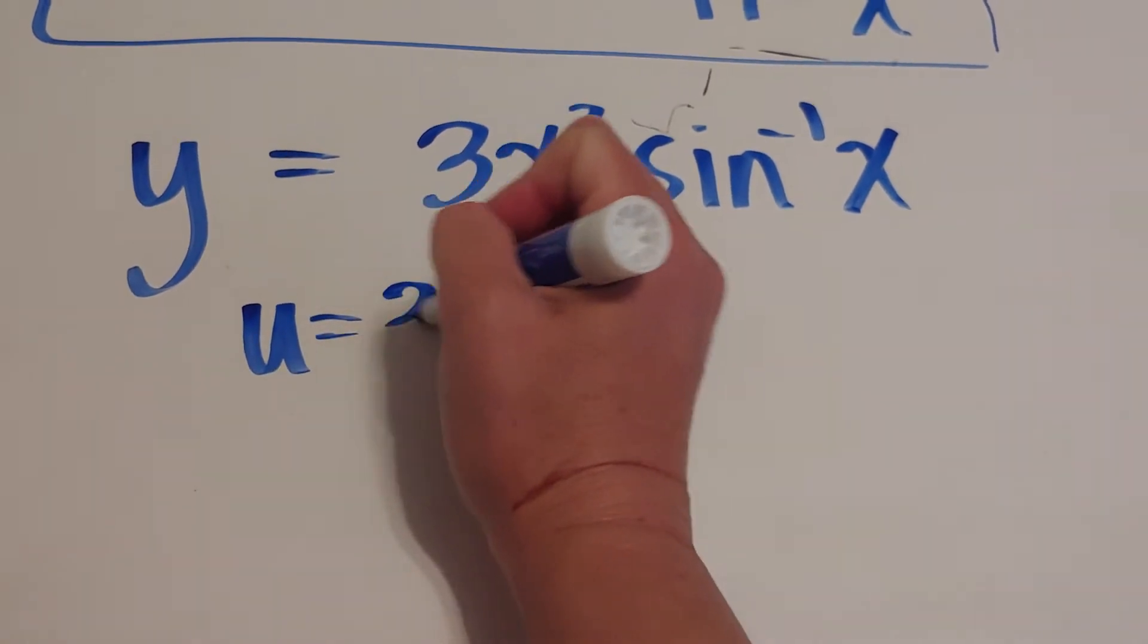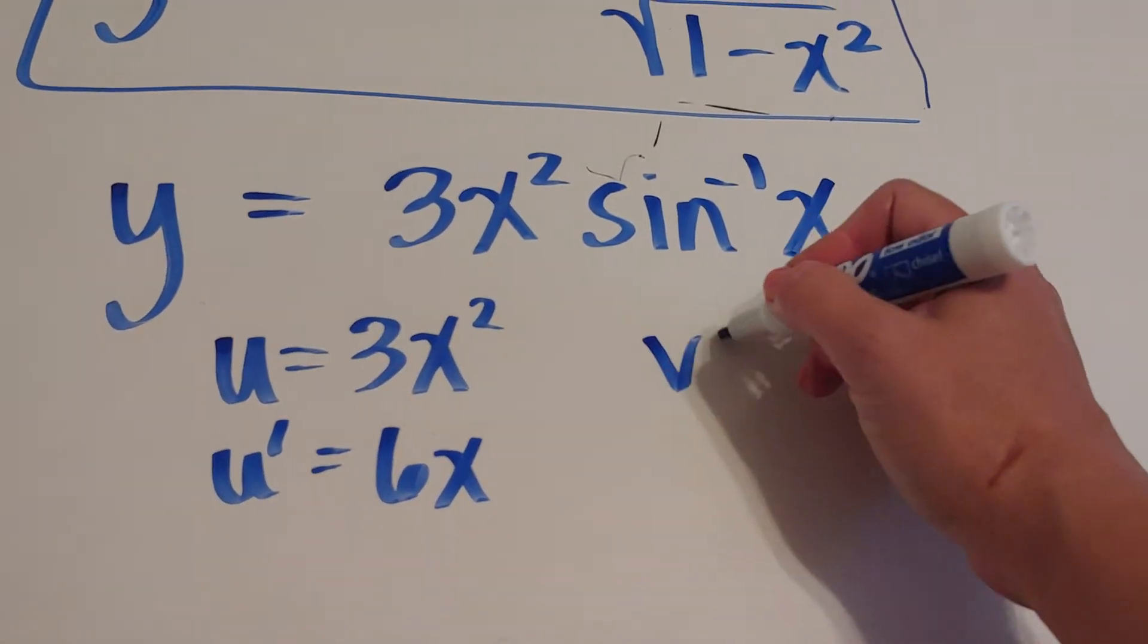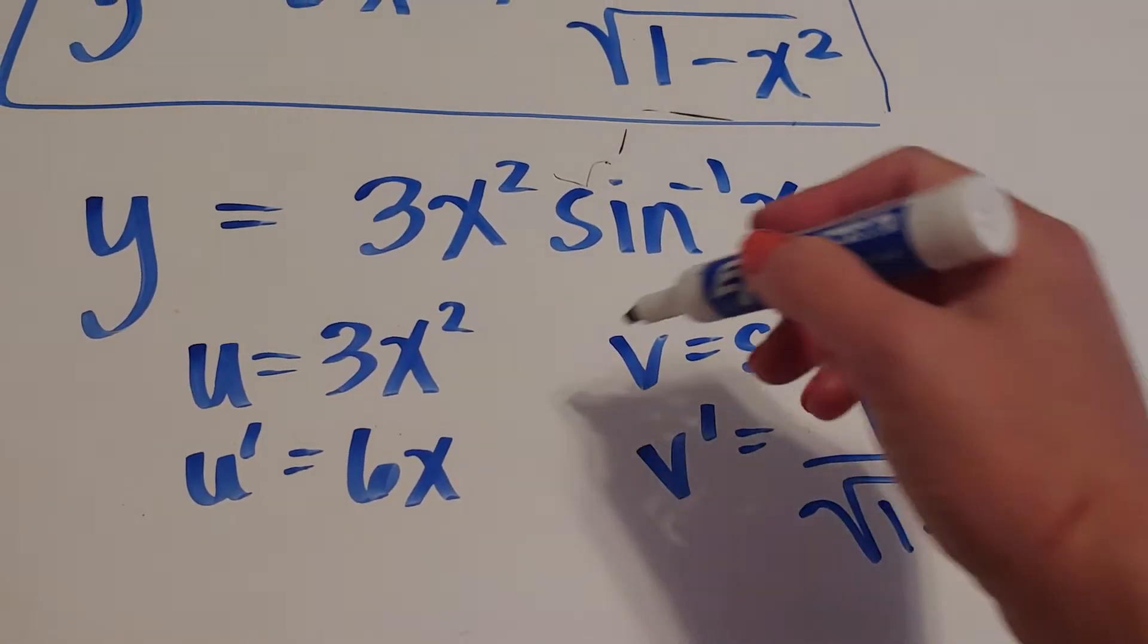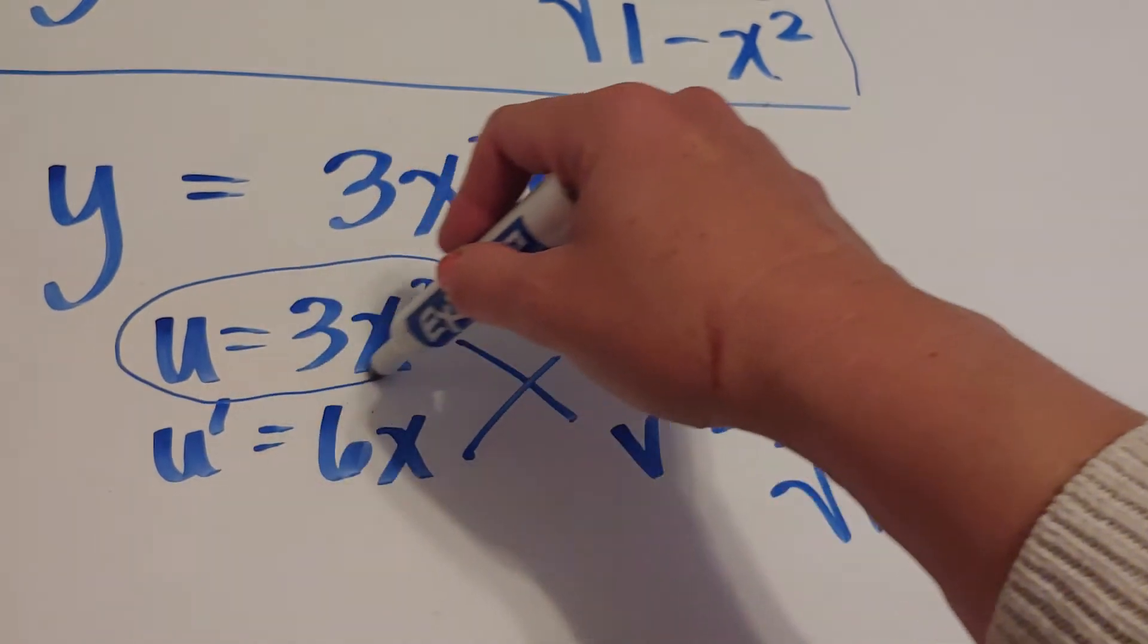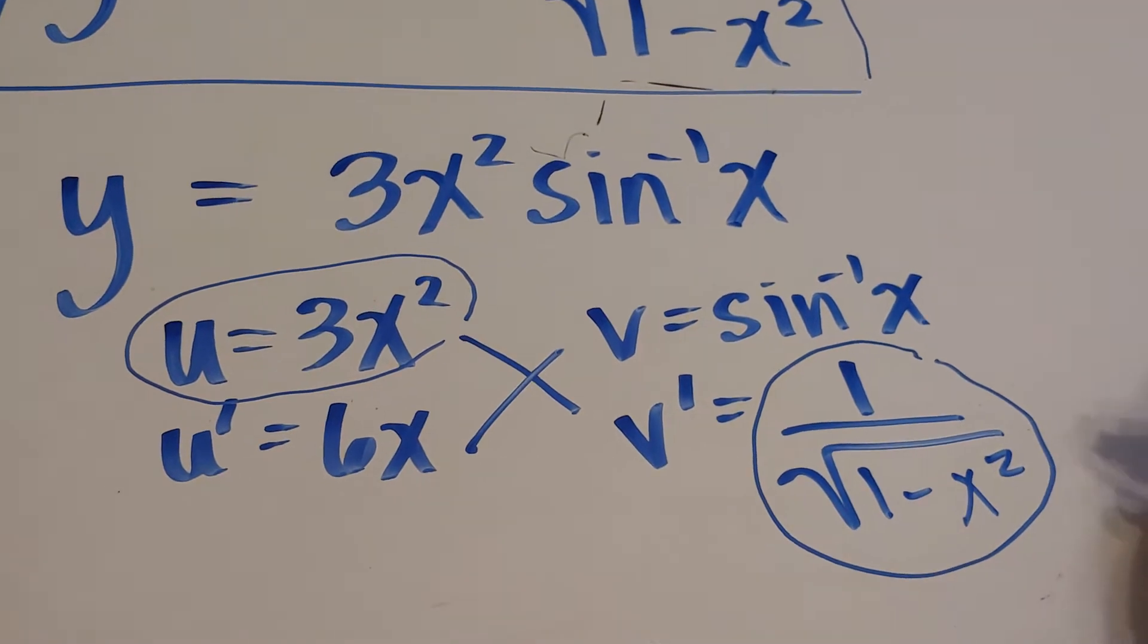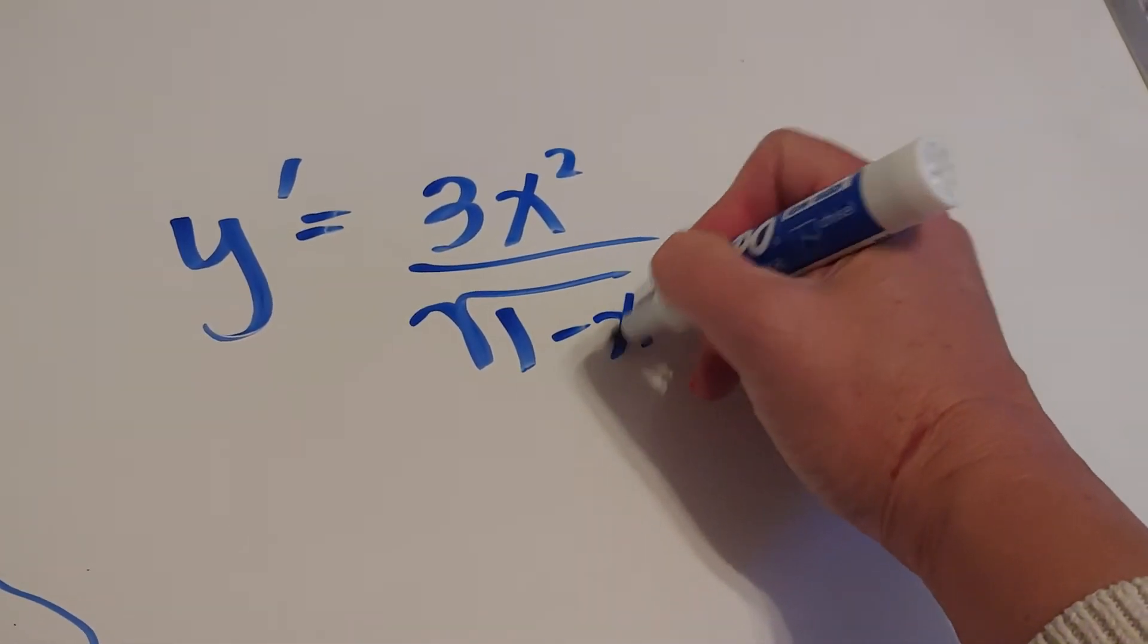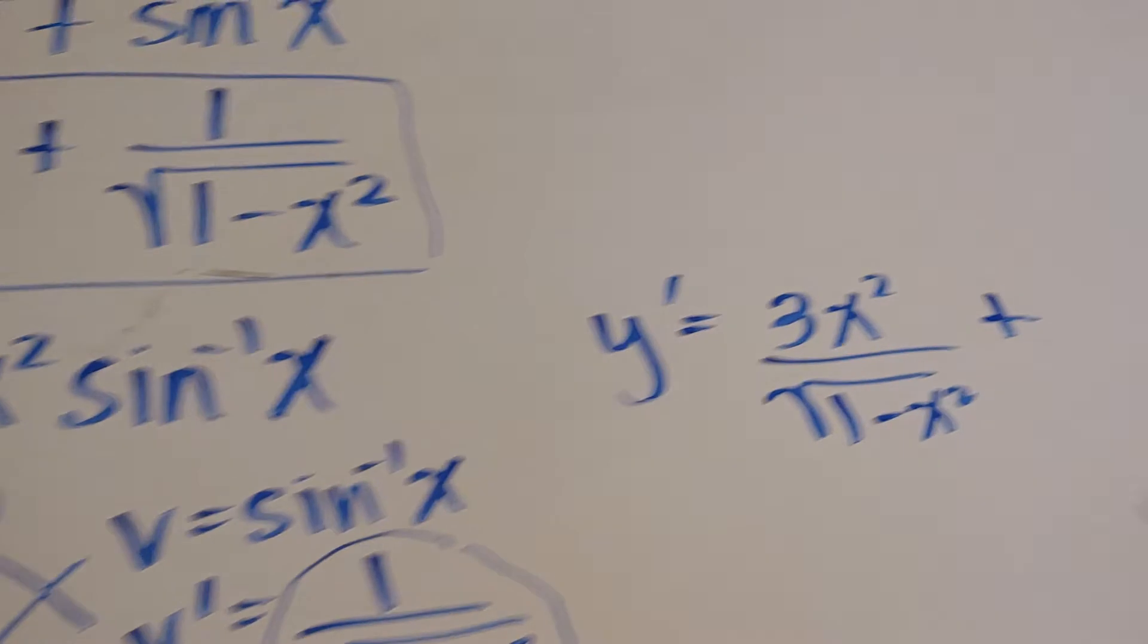U prime is 6x. V is sine inverse of x. And then v prime would be my new fact, 1 over the square root of 1 minus x squared. Cross-multiply. 3x squared over the square root of 1 minus x squared plus, that's me squishing this guy, and now this one will be 6x times sine inverse of x.